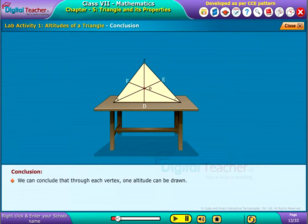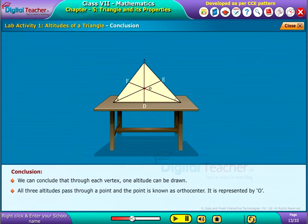We can conclude that through each vertex, one altitude can be drawn. All three altitudes pass through a point and the point is known as orthocenter. It is represented by O.